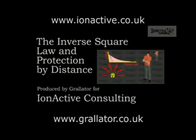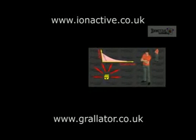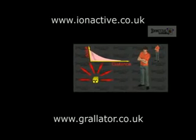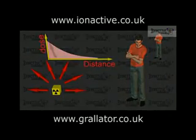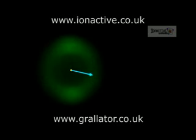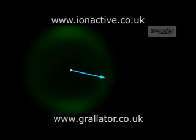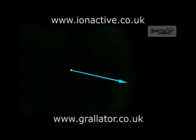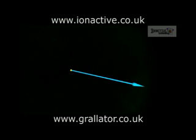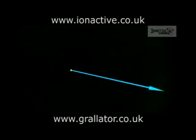Protection by distance is one of the three key protection principles against external radiation, the other two being protection by time and protection by shielding. Protection by distance is effective because for point sources the radiation spreads out spherically from the source, so that even with the absence of any shielding, the radiation is reduced as the radiation spreads more thinly as it travels outwards.